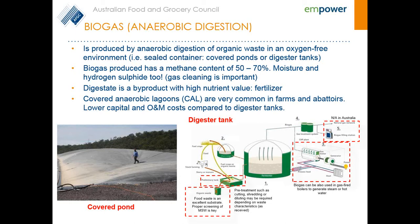The key thing is the digester tank, but there's also a pre-treatment stage where you make sure that the material being fed into the tank is suitable and won't damage the equipment or affect the biogas production yield. If the material isn't in the right condition — for example, if the size is too big — you need to cut it into pieces or dilute it, and all those things add to the operating costs.